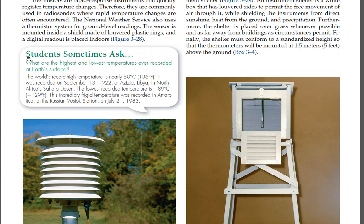What are the highest and lowest temperatures ever recorded at Earth's surface? The world's record high temperature is nearly 58°C (136°F), recorded on September 13, 1922, at Azizia, Libya, in North Africa's Sahara Desert. The lowest recorded temperature is −89°C (−129°F), recorded in Antarctica at the Russian Vostok station on July 21, 1983.